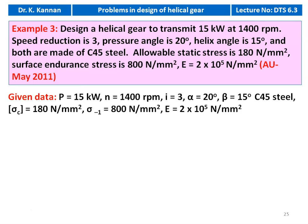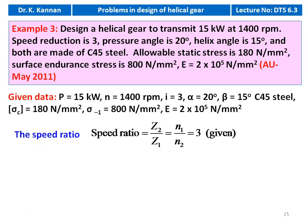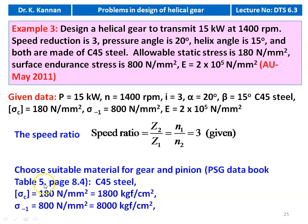Writing down the given data: power = 15 kW, pinion speed = 1400 RPM, speed reduction i = 3, pressure angle α = 20°, helix angle β = 15°, material C45 steel. Design compressive stress (allowable static stress) = 180 N/mm² = 1800 kgf/cm². Endurance stress σ₋₁ = 800 N/mm² = 8000 kgf/cm². Young's modulus E = 2 × 10⁵ N/mm² = 2 × 10⁶ kgf/cm². The unit conversion is required because our equations in the PSG data book use kgf/cm².